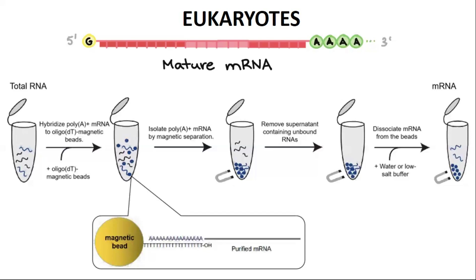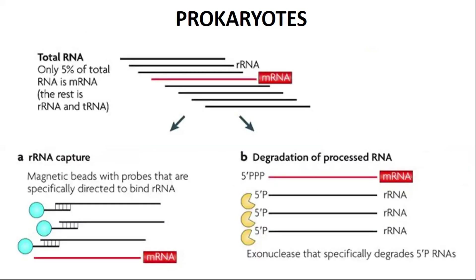In the case of prokaryotes — for example, if you are studying gene expression inside bacteria like E. coli or Pseudomonas — poly-A tails do not exist. Only about five percent of total RNA is messenger RNA in prokaryotes. So instead, we capture the ribosomal RNA and the messenger RNA is left behind, or we use enzymes that specifically degrade the ribosomal RNA, leaving us with the messenger RNA. Ribosomal RNA depletion is highly efficient for purifying messenger RNA in prokaryotes.